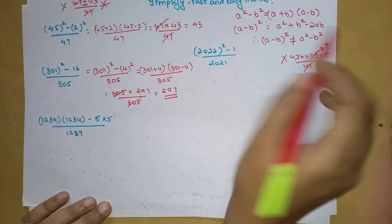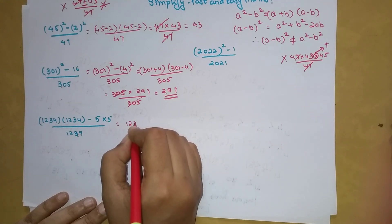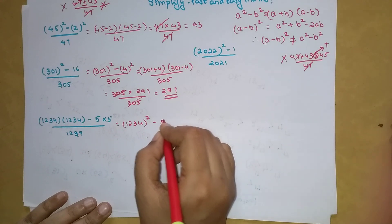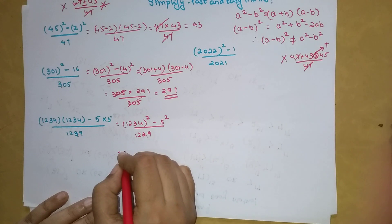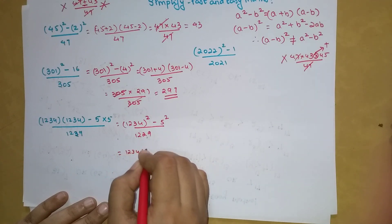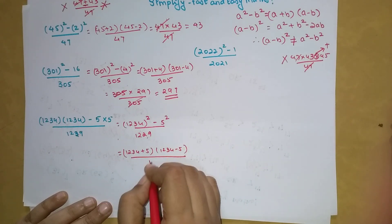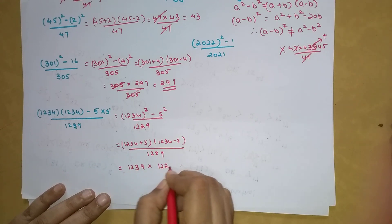So now the next one, again here we do not have any squares, but we can write 1234 into 1234 as nothing but 1234 the whole square, and 5 into 5 can be written as 5 square upon 1229. So this again will be 1234 plus 5, 1234 minus 5 upon 1229. This will be written as 1239 into 1229 upon 1229. So this cancels. We are left with 1239.